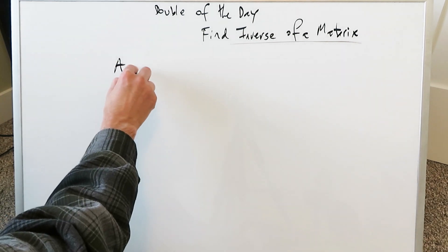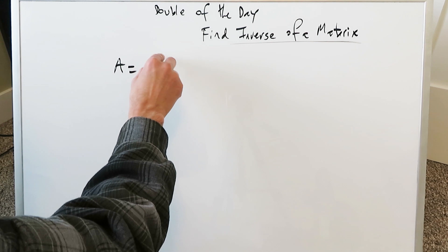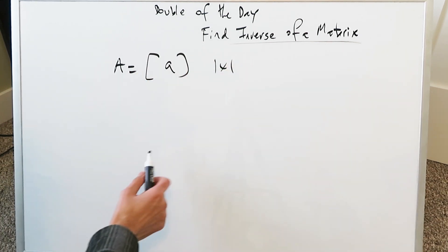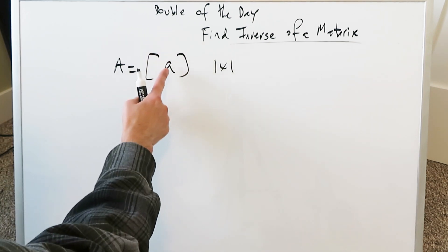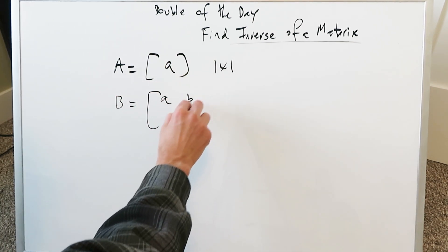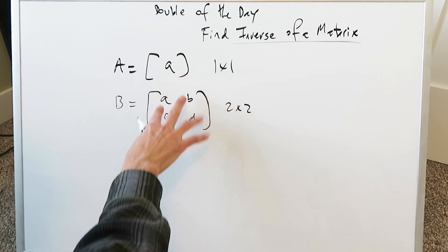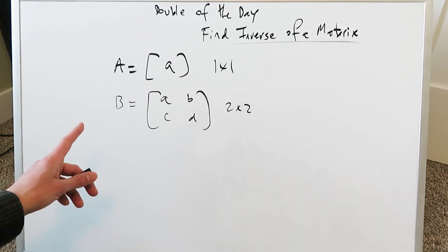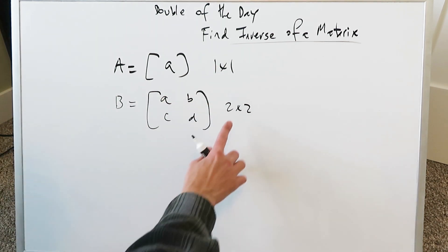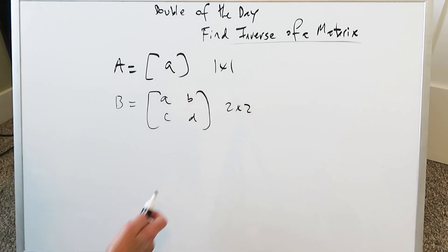If you have a matrix called A, a matrix designated as A, you can have a specific item in here — this is a one by one matrix. It has one row and one column. If you have another matrix, we'll call that B, you can have four elements in it — this is a two by two matrix. There are two rows and two columns. For the high school level math, especially with regards to finding the inverse of a matrix, you don't need to go into three by three matrices. Two by two and one by one is good.